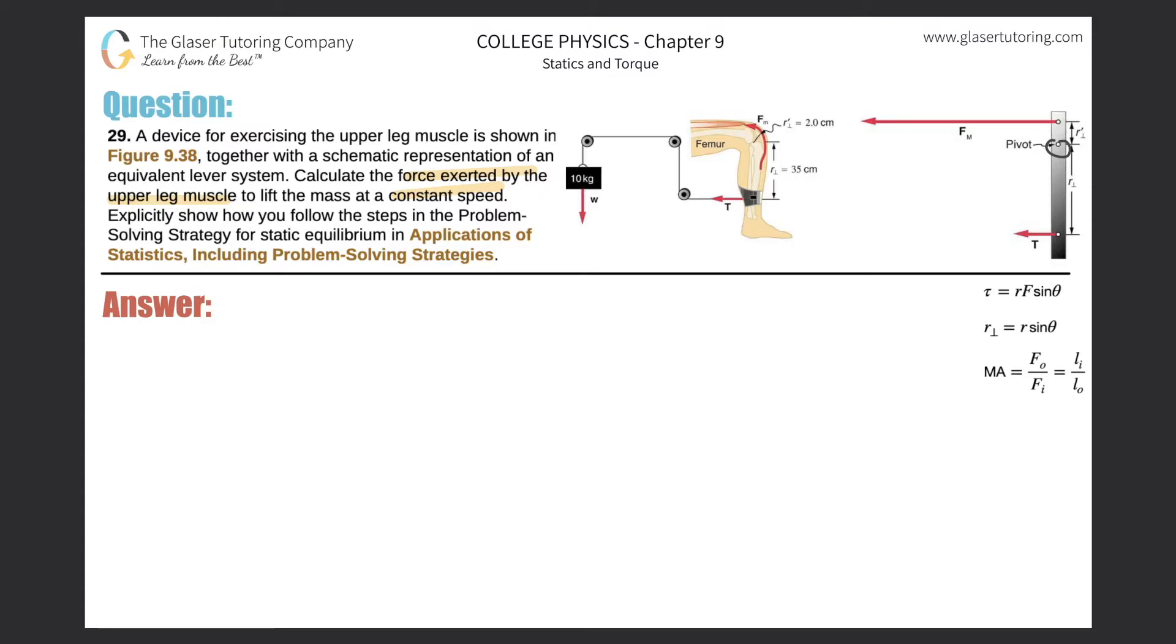It tells us constant speed, therefore there is no acceleration, and I know the sum of the torques in this problem will equal zero. How many torques are there? There are two, because there are two forces acting at a distance from the pivot point.